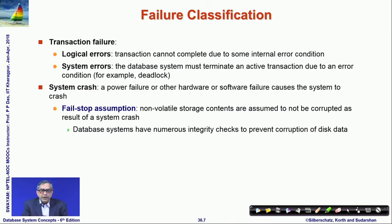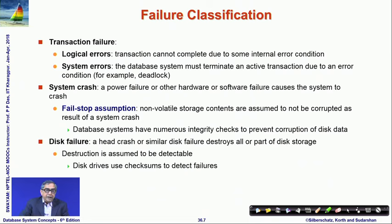The second possible error is a system crash due to hardware failure, power failure, or software failure. We try to make fail-stop assumptions where non-volatile contents are assumed not to be corrupted, and database systems involve integrity checks to prevent data corruption. The third broad category is disk failure, where the hardware may fail or the head may crash. Such failures must be detectable using checksums and other mechanisms.